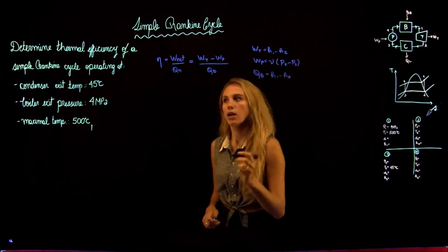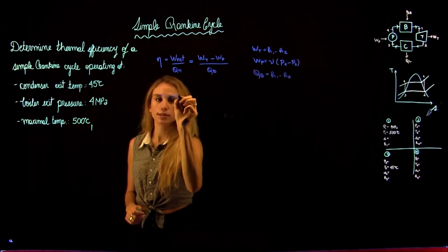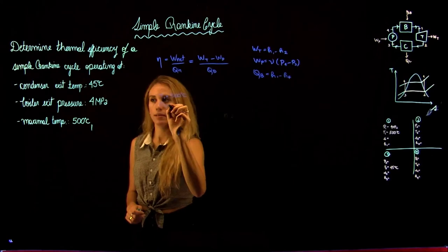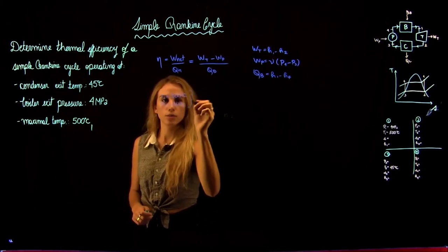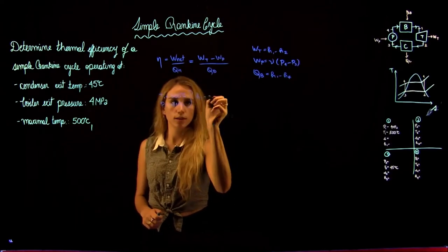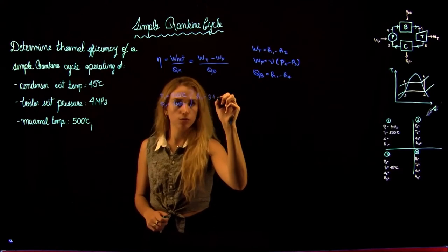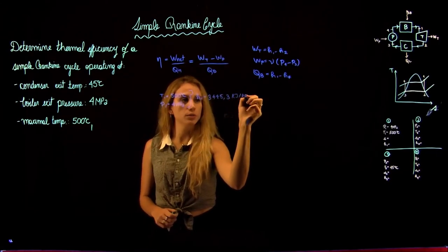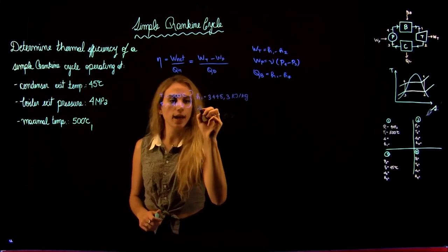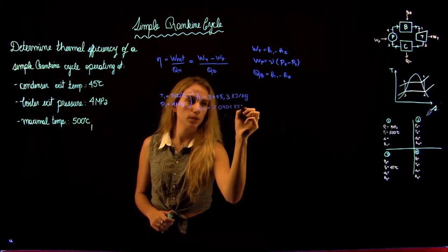Since we know T1 is 500 degrees Celsius and P1 is 4 MPa, we can look up the tables to find H1 equals 3,445.3 kJ/kg, and the entropy at state 1, S1, equals 7.0901 kJ/kg·K.